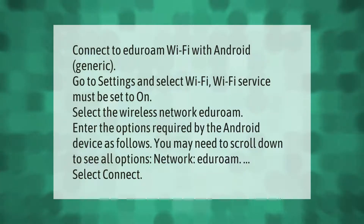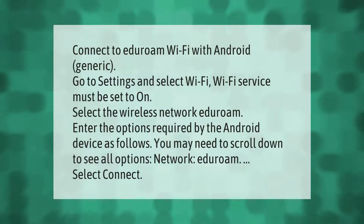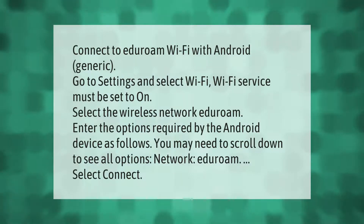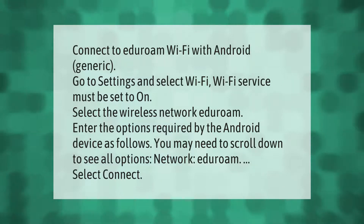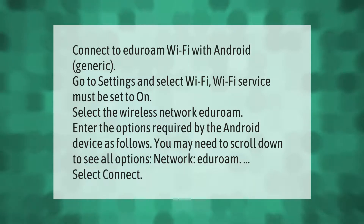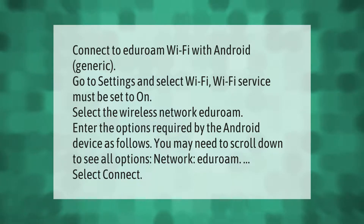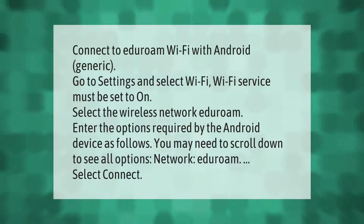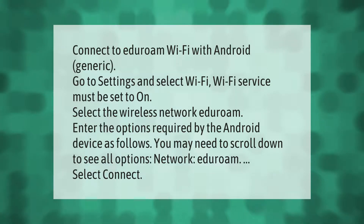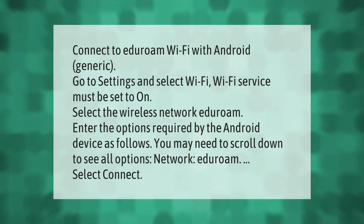Connect to eduroam Wi-Fi with Android (generic). Go to Settings and select Wi-Fi — the Wi-Fi service must be set to On. Select the wireless network eduroam, then enter the required options for your Android device. You may need to scroll down to see all options. Select Connect.